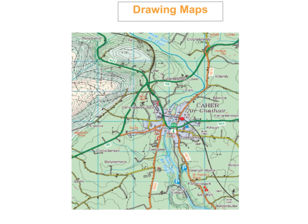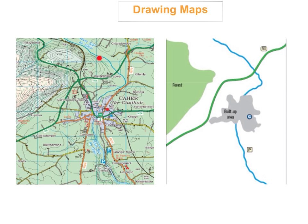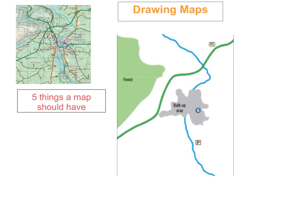So the first thing we're going to look at is maps. This is what a typical ordnance survey map will look like. One of the questions that comes up every single year in the exam paper will be to draw a map or a photograph, so it's really important that you know how to draw a map and what things should go on your drawing when you draw an ordnance survey map.